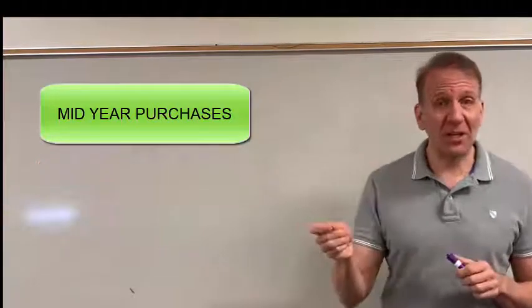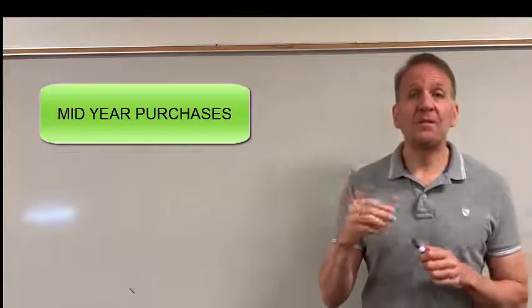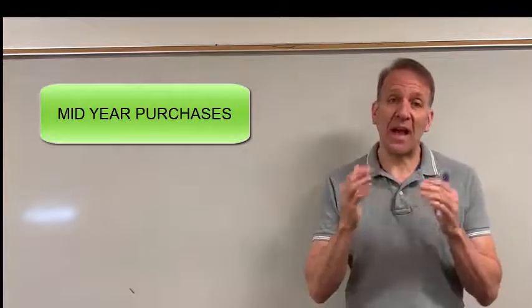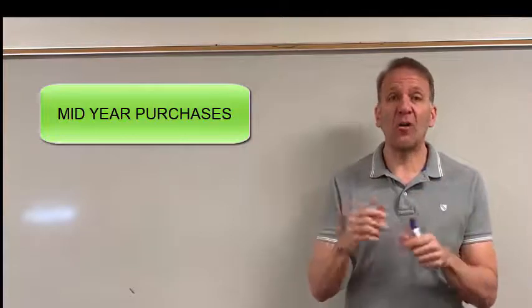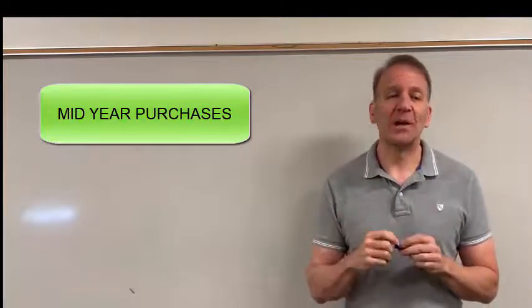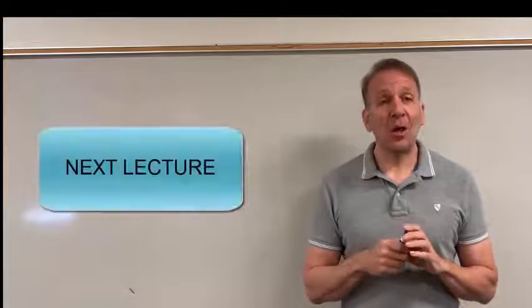In the next year, in year two, the journal entry would be for $12,000, because we would have had the asset for the full 12 months, the full year. I hope this has helped you.